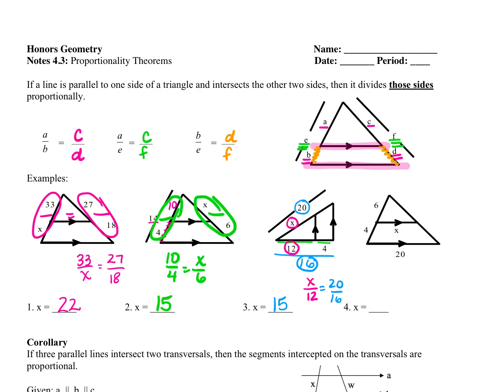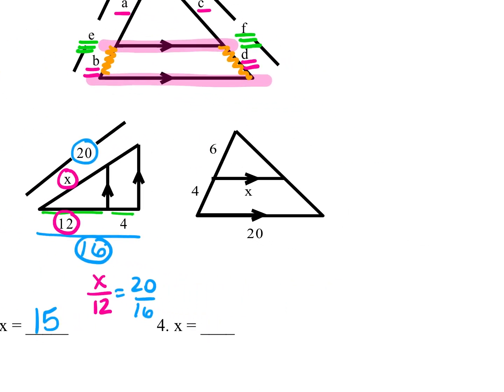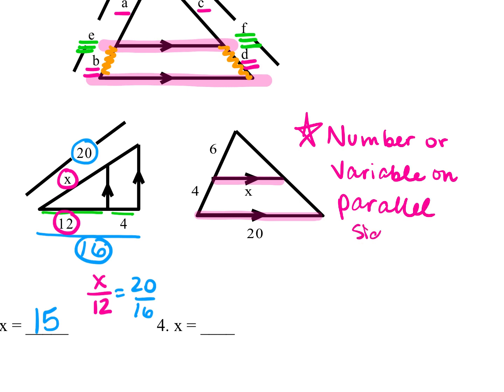Alright, so when we look at question number 4, it is a little bit different. And it's different because we have a variable on one of the parallel sides. So I want you to, out to the side, put a star, and I want you to write if there's a number or variable on the parallel sides, we are going to redraw our two triangles. And this is how we worked these questions on the last set of notes.